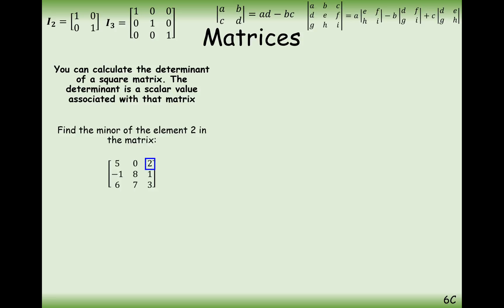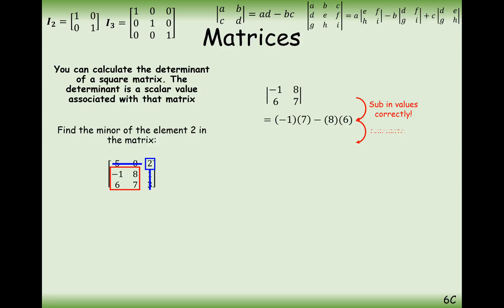Let's have a go at this matrix. First, find the minor of the element 2 in the matrix — that minor matrix is [-1, 8; 6, 7]. Find the determinant of this: minus 1 times 7, take away 6 times 8. We get a final answer of minus 55.